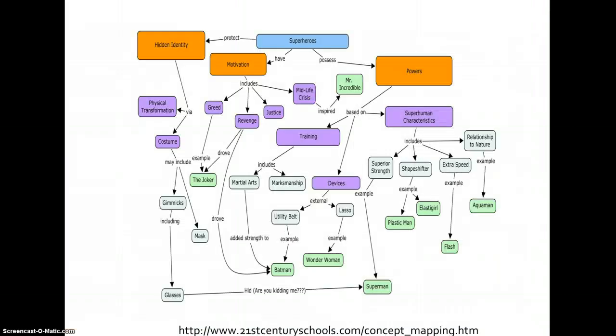Here's an example from 21st century schools. I particularly like this one not only because it's a clever topic—superheroes—but the students who created it used color to help organize their ideas. This is a fairly robust map, and you'll notice that the links between concepts typically create a phrase or a sentence.